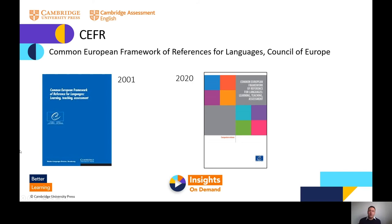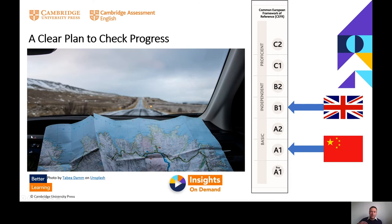If you know something about the CEFR, what you probably know are the levels. The levels go from C2 at the top for the most proficient language user, down to A1 and pre-A1 at the bottom for the least proficient language user, and all the levels in between: A1, A2, B1, B2, C1, C2. That's useful because we can chart progression using this scale.